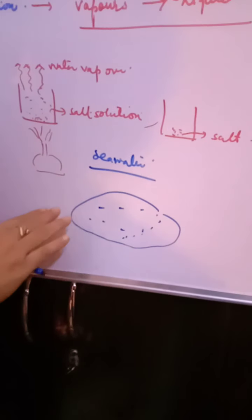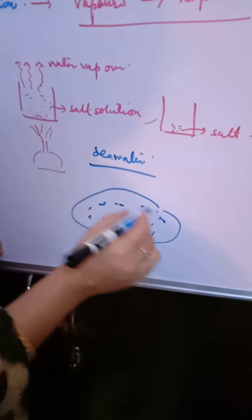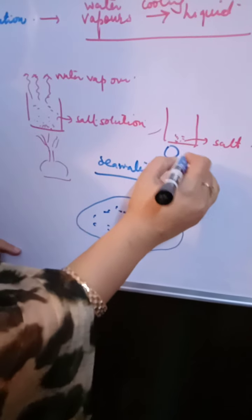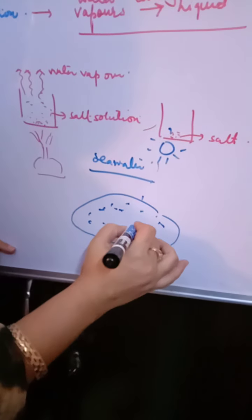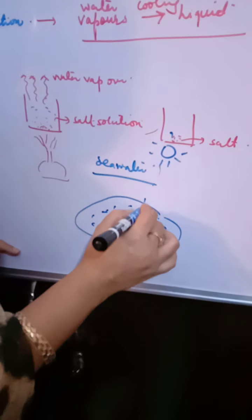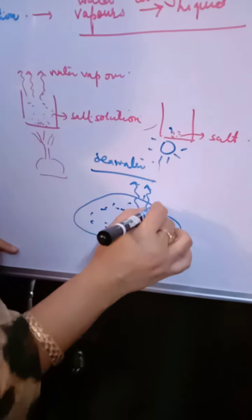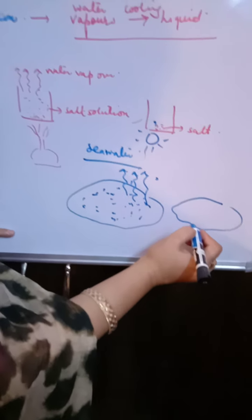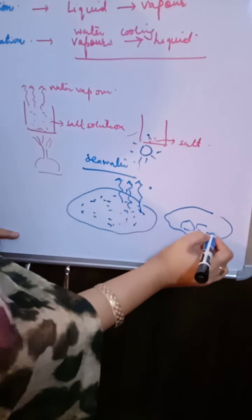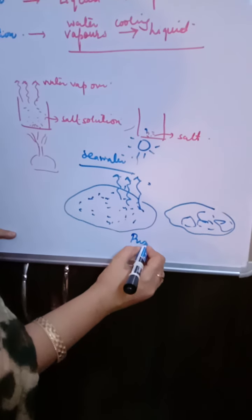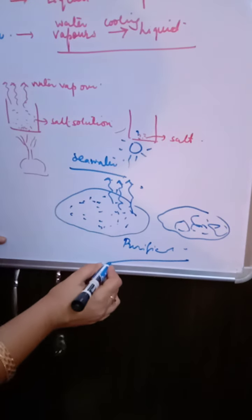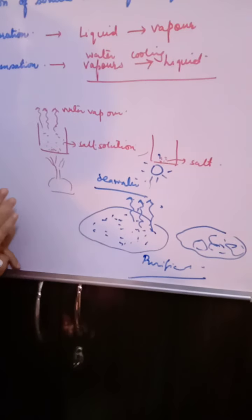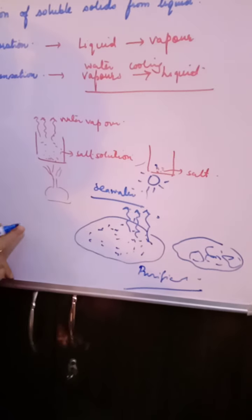In seawater, shallow pits are made. They are not very deep, and it is left for few days. Slowly by gaining heat from the sun, the water that is present will change into vapor form. After few days you will find salt crystals in the same shallow pit.